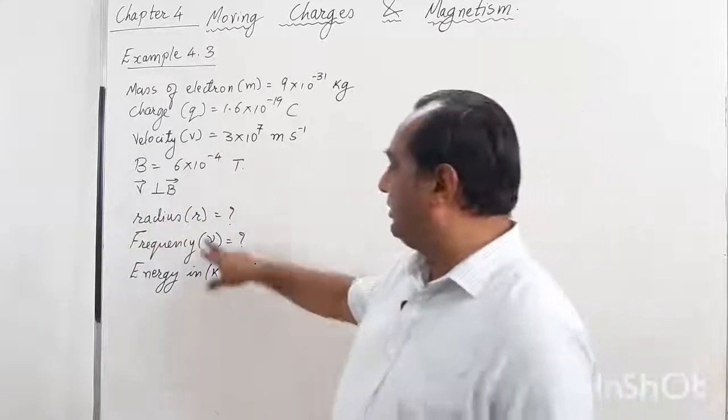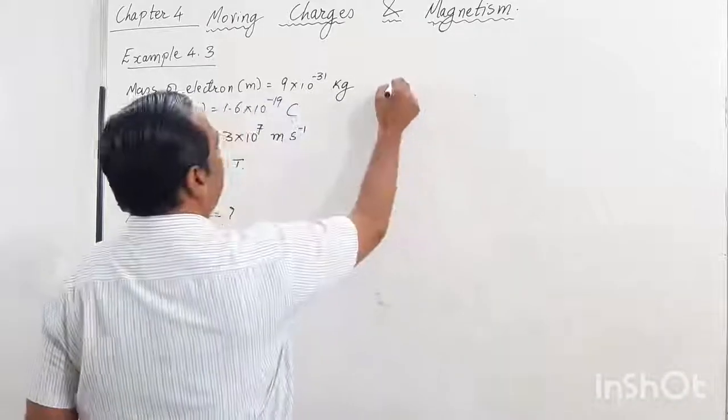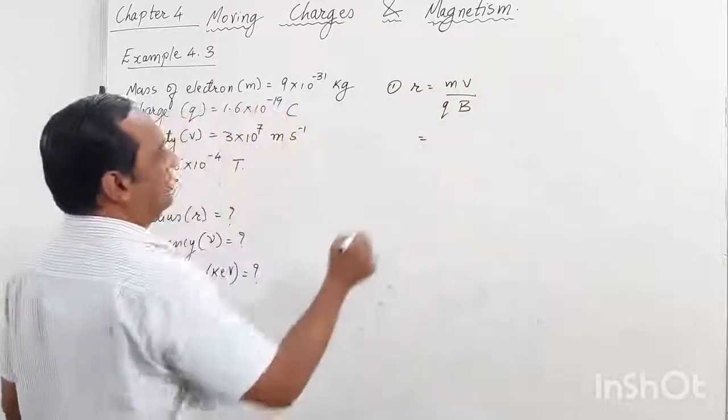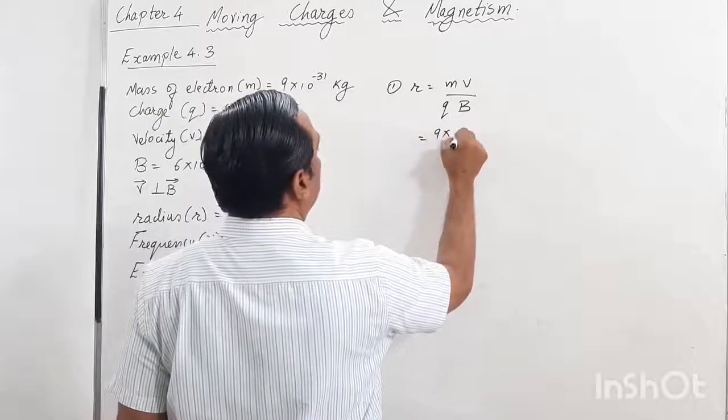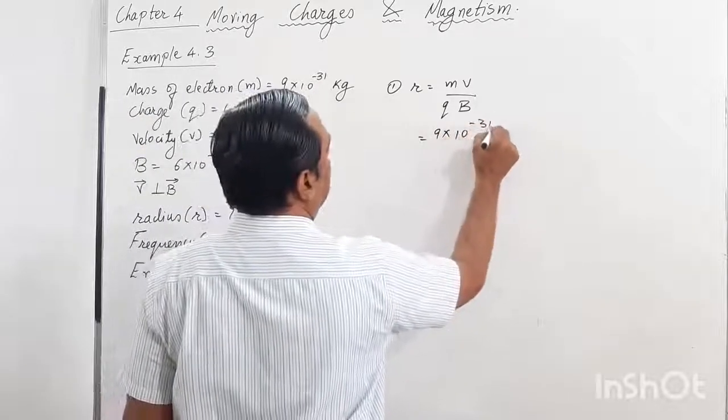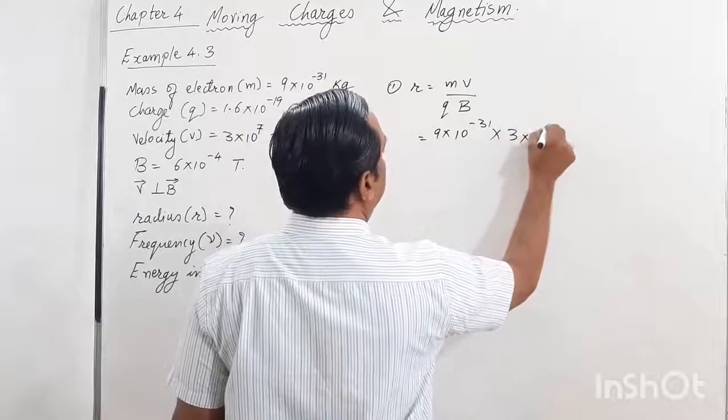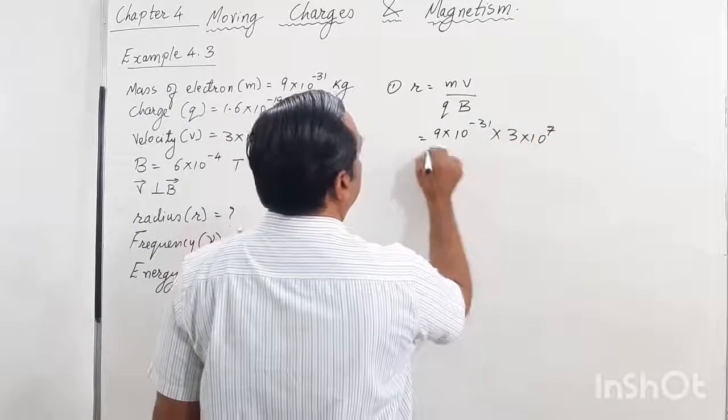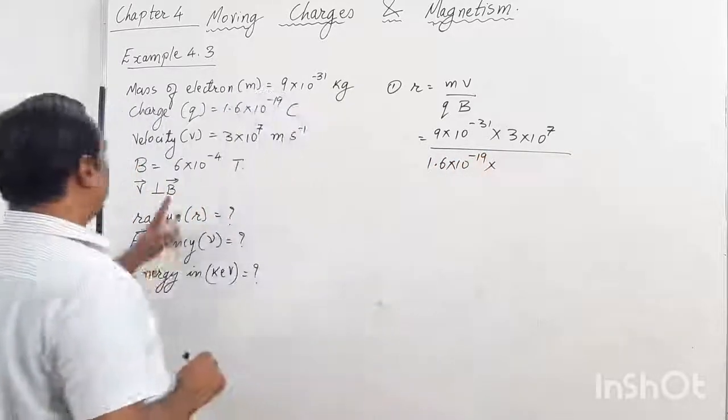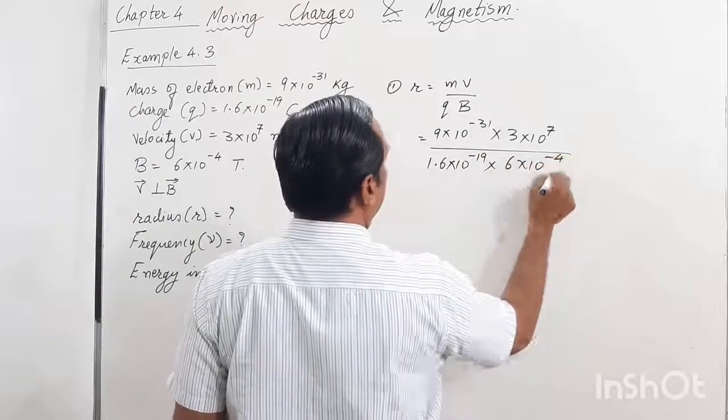We have to find out three things: radius, frequency, and energy. The radius formula is R = mv/qB. We will simply put the values: radius equals 9×10⁻³¹ multiplied by 3×10⁷ divided by 1.6×10⁻¹⁹ and 6×10⁻⁴ tesla.